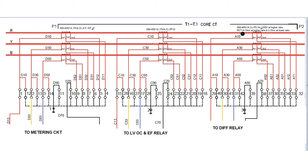The third core specification: CT ratio is the same, class is TS (protection special class), and knee point voltage is 250V at the higher ratio. RCT is 4 ohms at the higher ratio (600/1) and 2 ohms for the lower ratio (400/1).